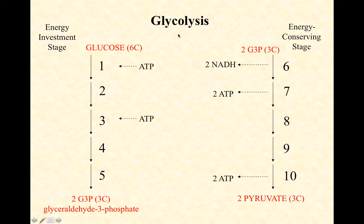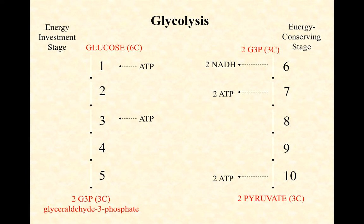We also produce two NADHs. NADH are high-energy electron carrier molecules. NAD+ is a coenzyme used by a class of enzymes called dehydrogenases. When a dehydrogenase strips high-energy electrons off a molecule, it hands two electrons and one proton to its NAD+, which then releases as NADH. These NADHs carry a pair of high-energy electrons and deliver them to the electron transport chain to produce even more ATPs.